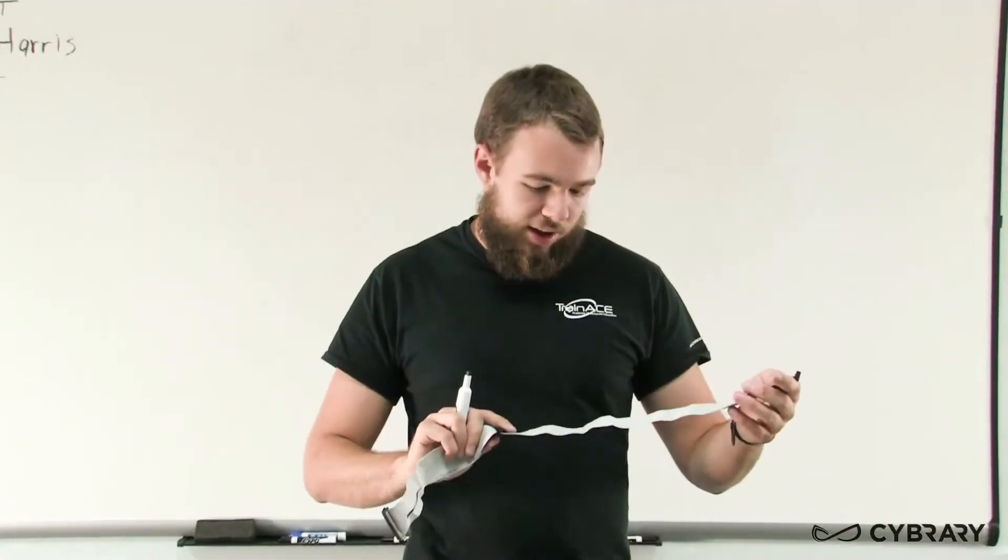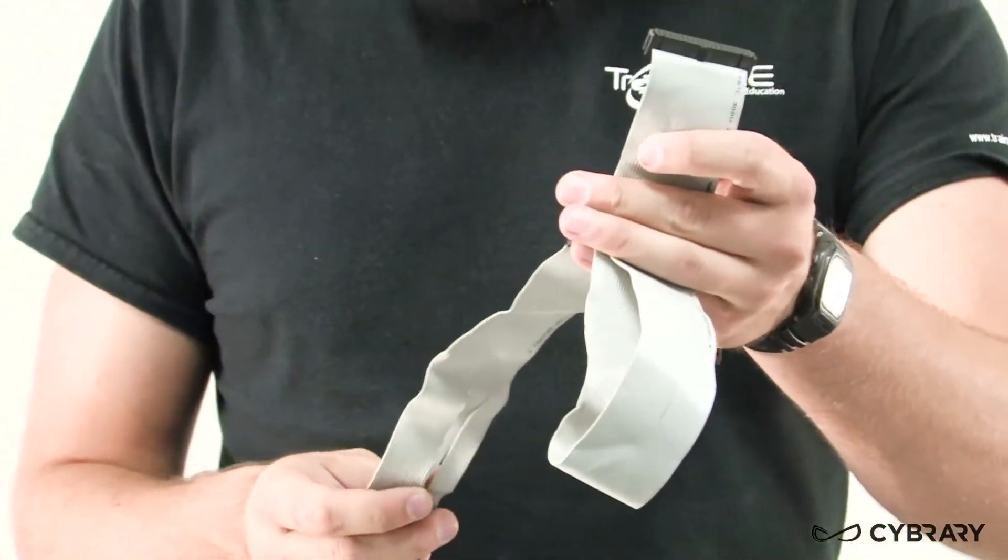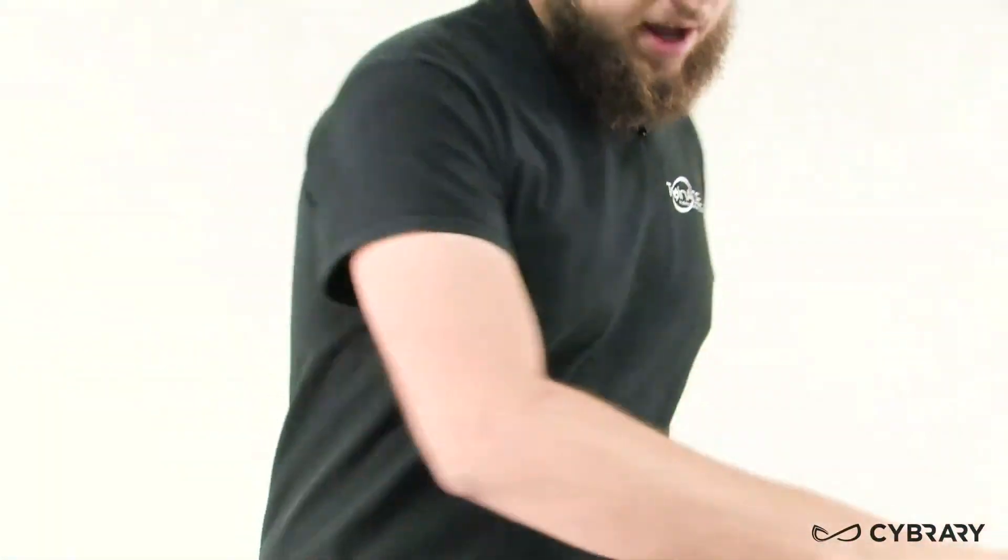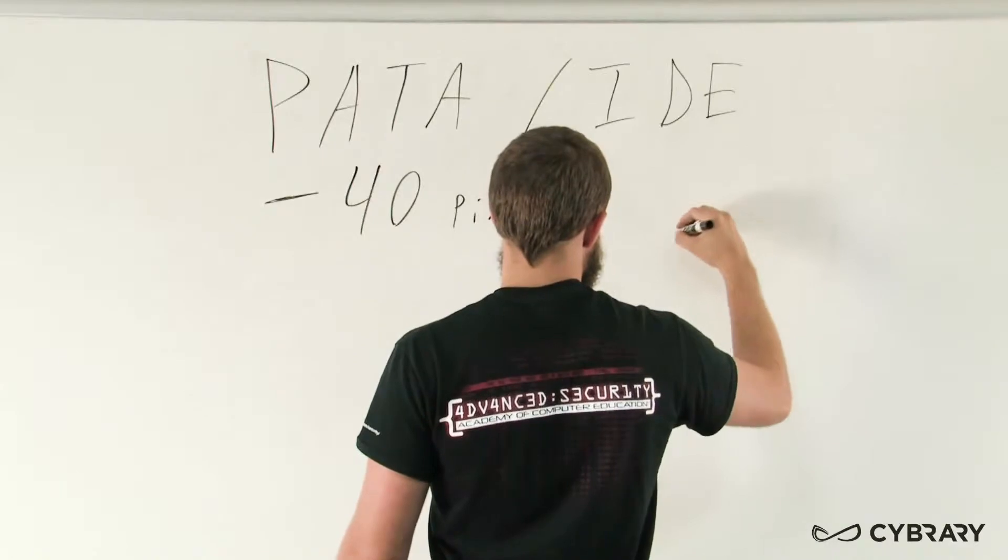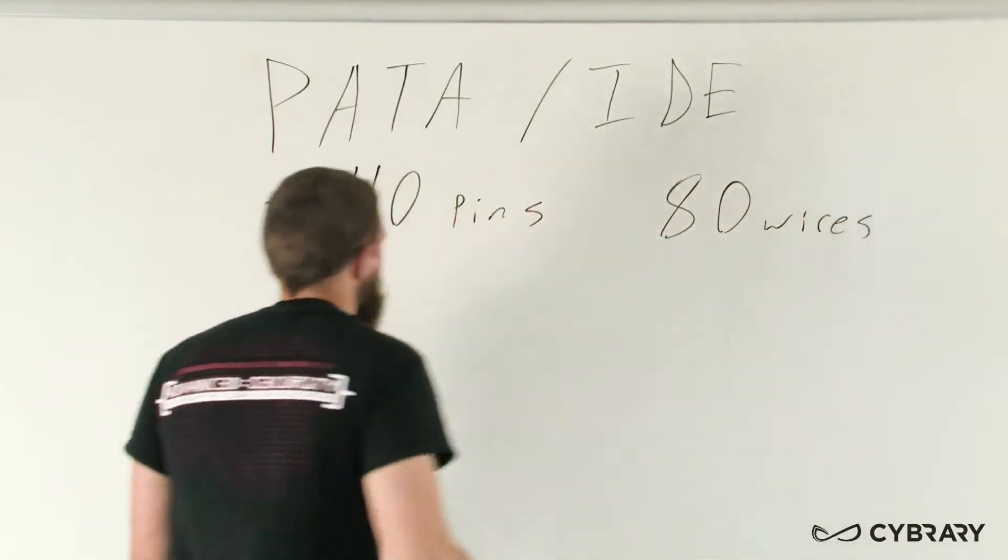Our PATA cables are slightly different. This is actually a floppy drive connector, as we can tell by the twist in the cable. But PATA cables are ribbon cables with 40 connections and two versions - a 40-wire version and an 80-wire version.